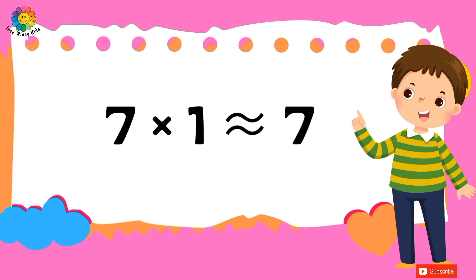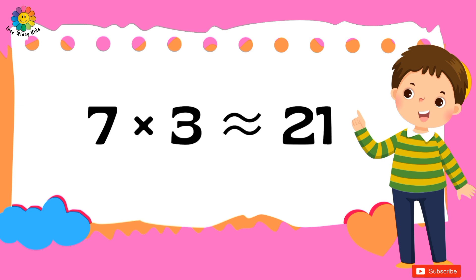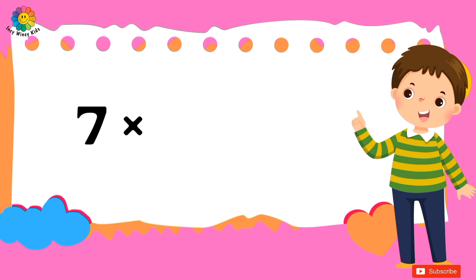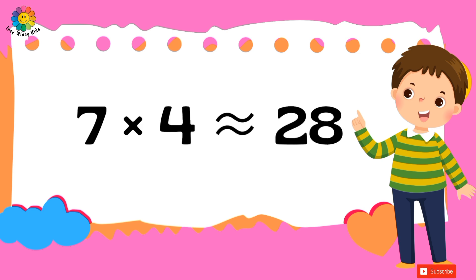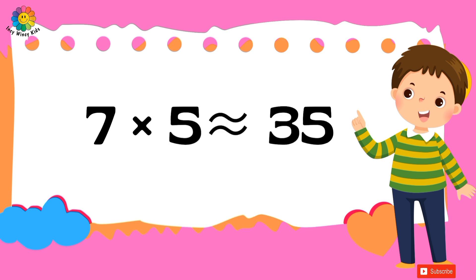Seven ones are seven. Seven twos are fourteen. Seven threes are twenty-one. Seven fours are twenty-eight. Seven fives are thirty-five.